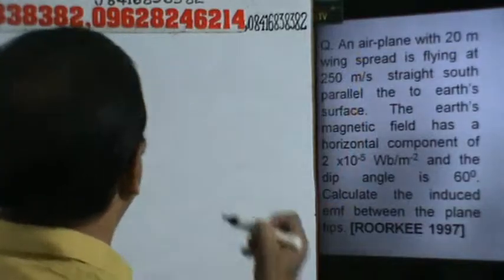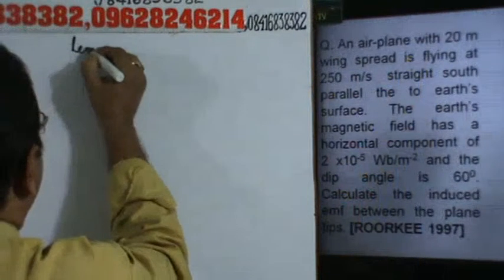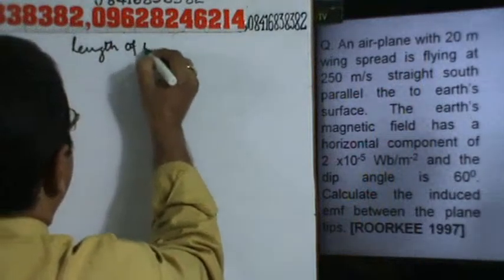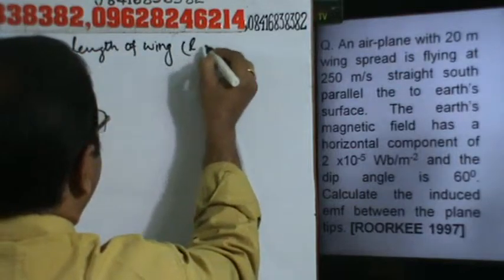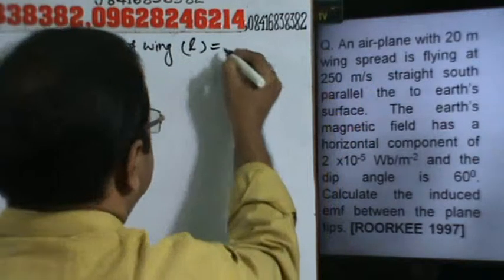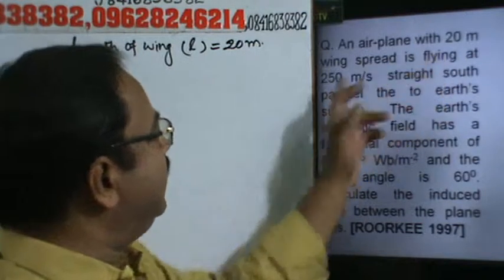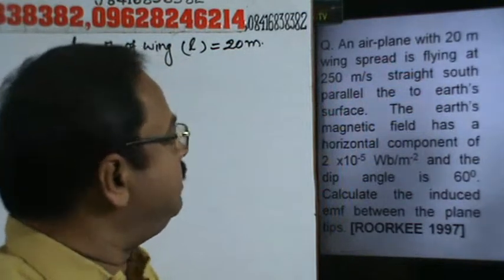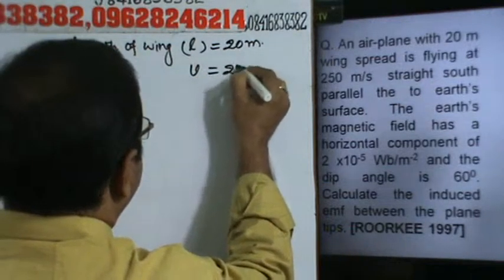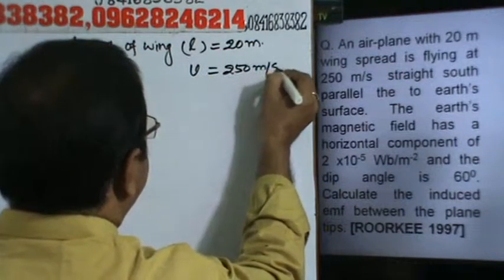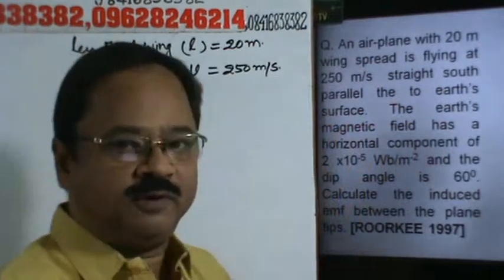What is the length of the wing? The length of the wing of the aeroplane, L is equal to 20 meters, and this aeroplane is flying at a speed V equal to 250 meters per second, straight south parallel to the earth's surface.